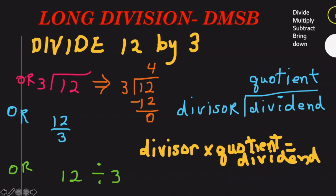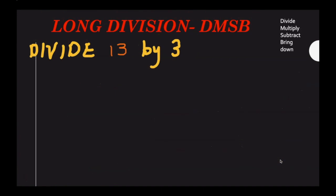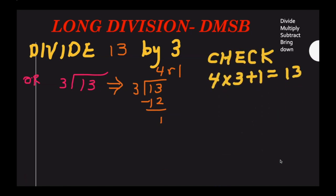To check a division problem in this very simple example, you take the divisor times the quotient. Divisor times the quotient will give you the dividend. Let's take that a step further. Let's do 13 divided by 3. Of course, that doesn't go in evenly. It's 4 and you get a remainder of 1. But now for the bigger lesson, notice when you check it, the divisor times the quotient plus the remainder gives you the dividend, 13.